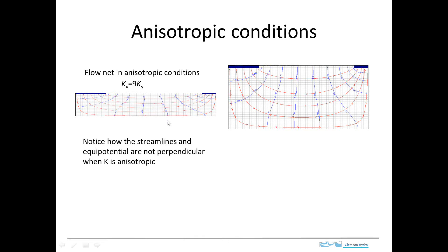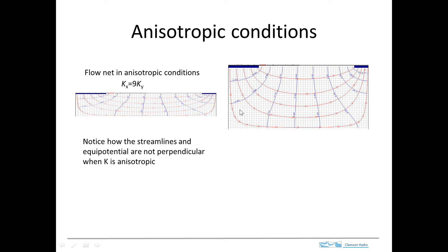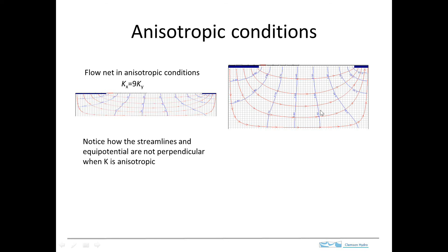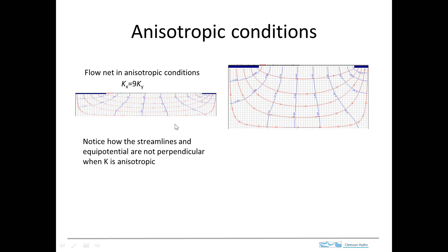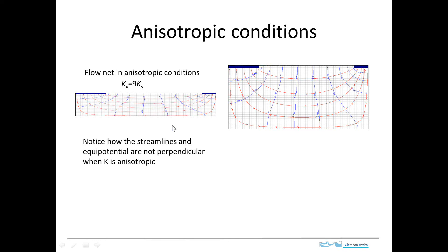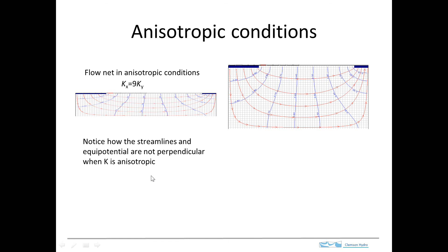And you can see that what's happened is that compared to this flow net, this flow net has much more of the flow going in the horizontal direction. And that's what you might expect for a layered system with horizontal layers.